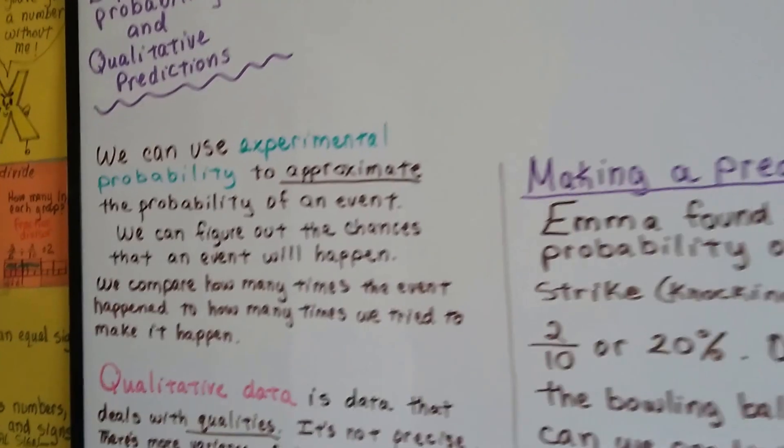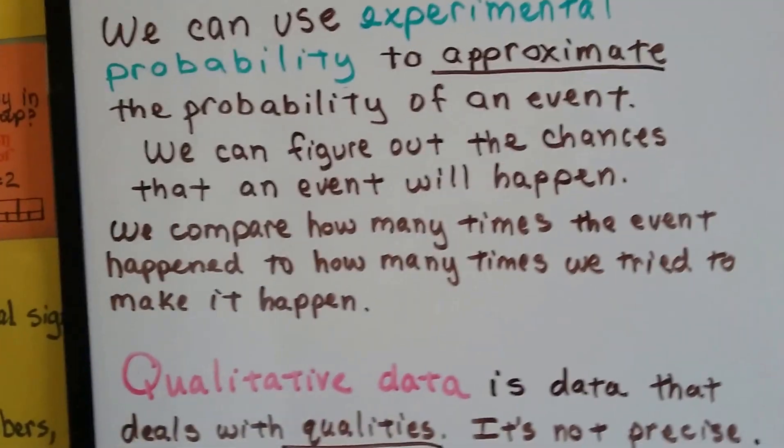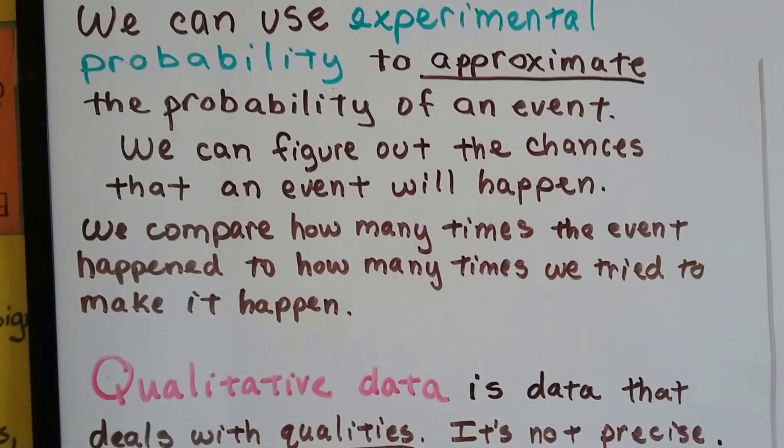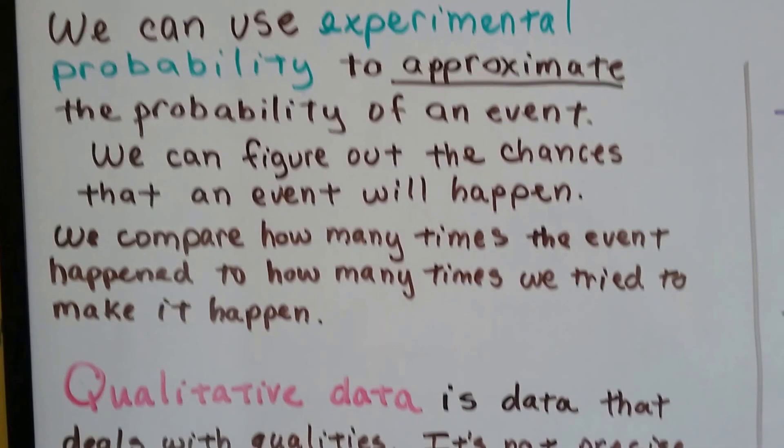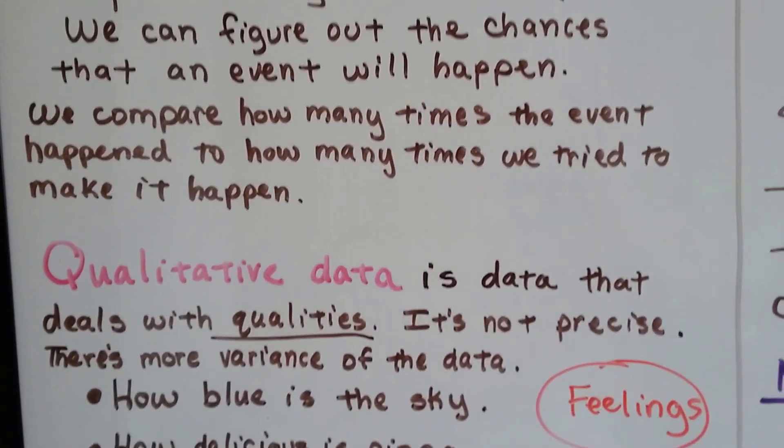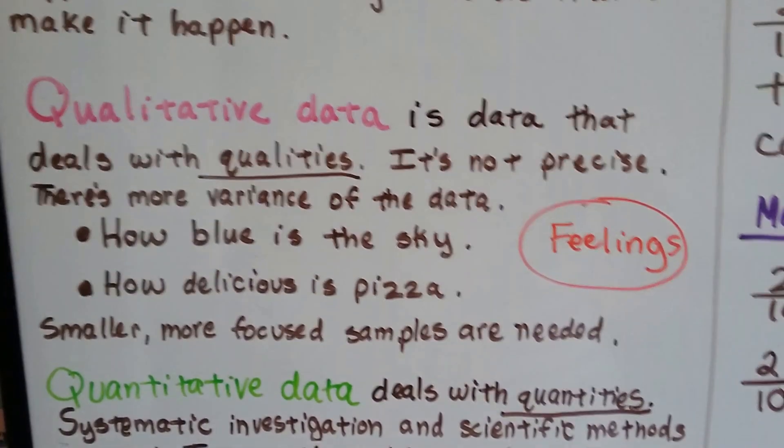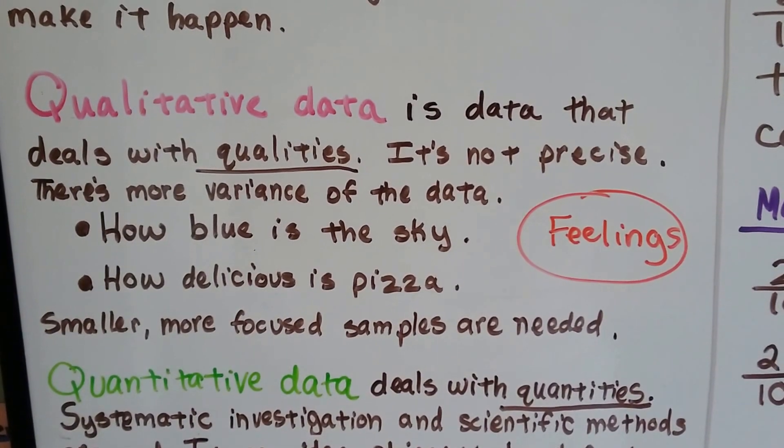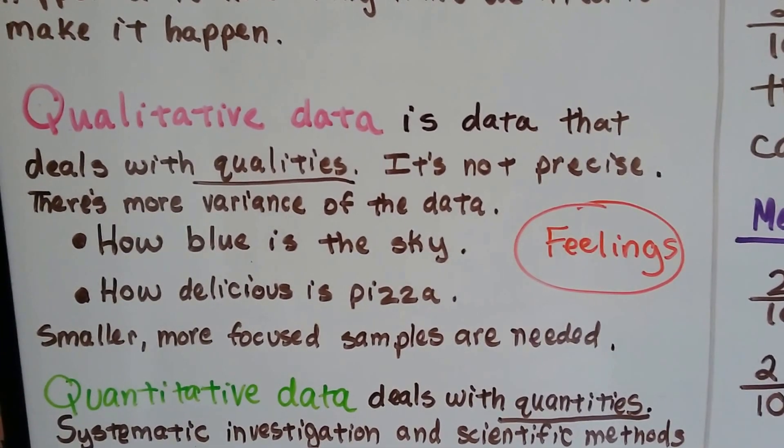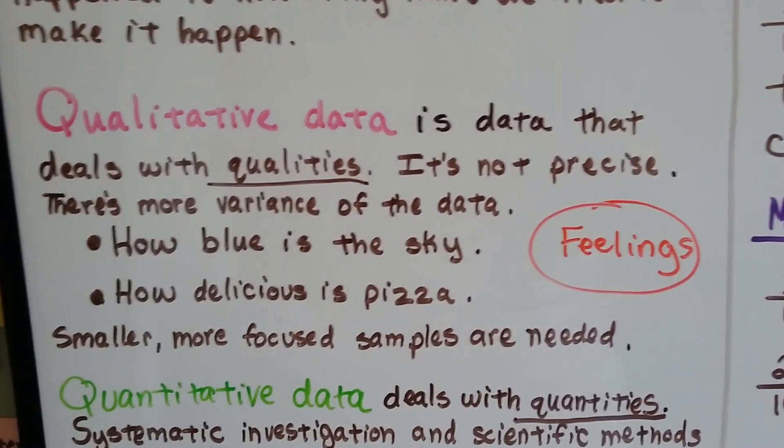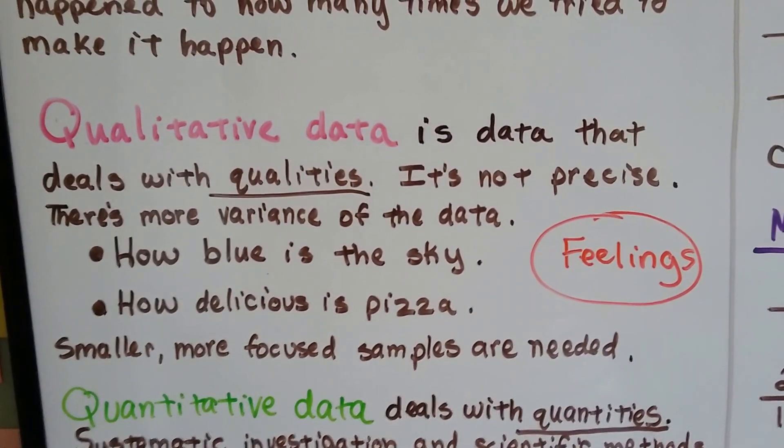So we can use experimental probability to approximate the probability of an event. We can figure out the chances that the event will happen. We compare how many times the event happened to how many times we tried to make it happen. Qualitative data is data that deals with qualities. It's not precise. There's more variance in the data. It's like how blue is the sky?